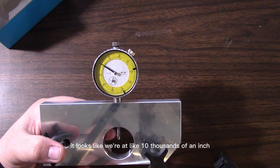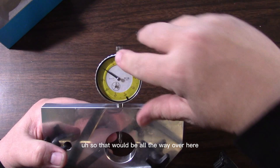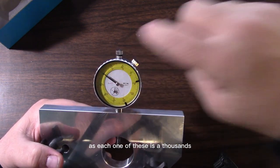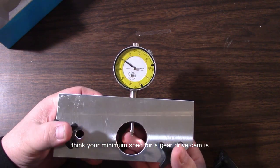Then you're going to turn that rear wheel and you're going to watch this indicator. Looking up the specs, unacceptable runout on a Harley crankshaft looks like it's at like ten thousandths of an inch. That would be all the way over to here. Each one of these is a thousandth. I think your minimum spec for a gear drive cam is three thousandths of an inch.